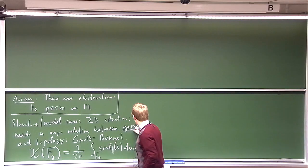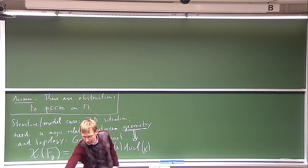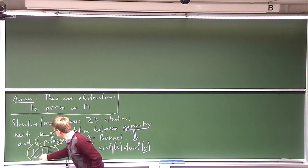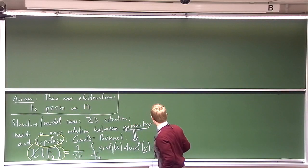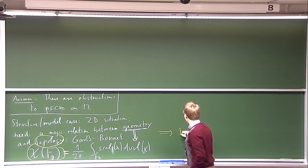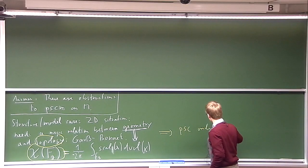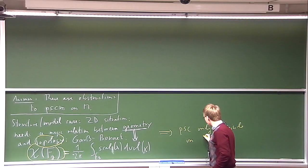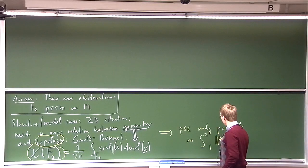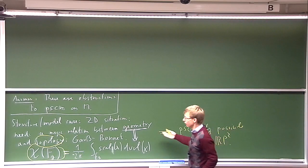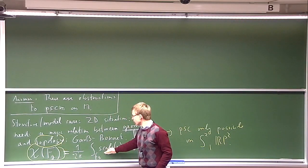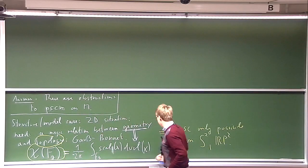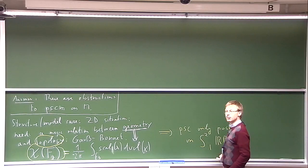The geometry is clearly related by an equality to the topology. As a consequence, positive scalar curvature is only possible on the sphere and the real projective plane among connected surfaces, because these are the only surfaces with a positive Euler characteristic, and the integral of a positive function must be positive. Of course, we are also using the classification of surfaces here.